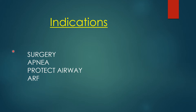The most common patient you will work with on a ventilator is one who has acute respiratory failure. When we talk about organ failure — if the liver or kidneys fail, those organs can't do their job. The job of the respiratory system is to get oxygen in and CO2 out. If either of those functions fails, we may want to place an endotracheal tube and provide mechanical ventilatory support.